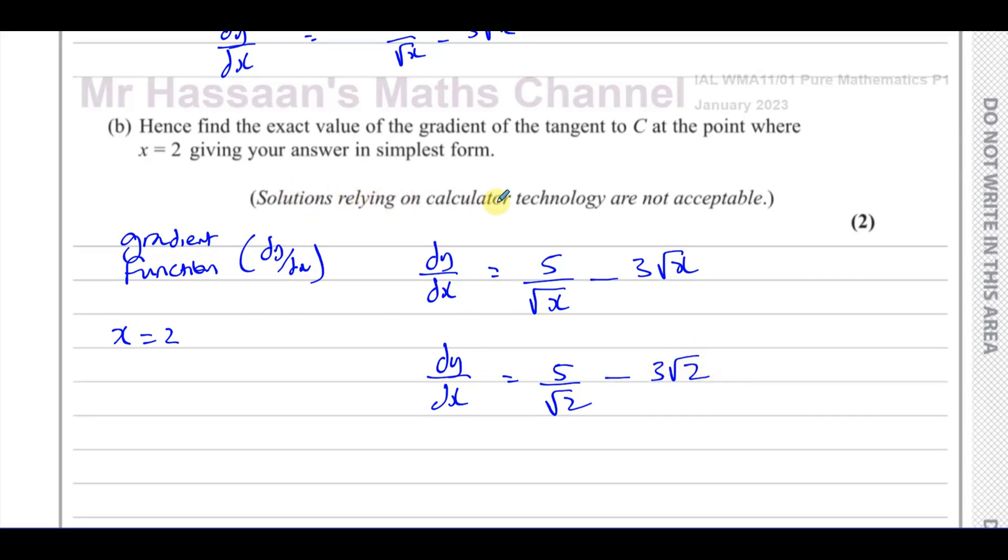So dy/dx equals 5 over root 2 minus 3 root 2. Now, when it says solutions relying on calculator technology are not acceptable, what it means is they don't want you to just put this into your calculator and write the answer down. If you did that, you would definitely lose one of the marks. One of the marks you would get for putting x equals 2 into your expression. But if you just write this in your calculator and put the answer down, you definitely would lose a mark.